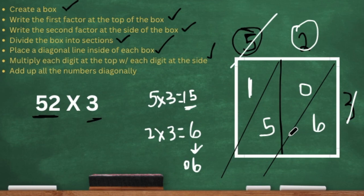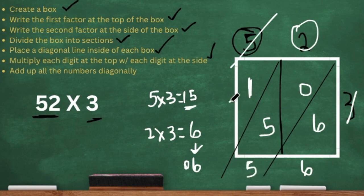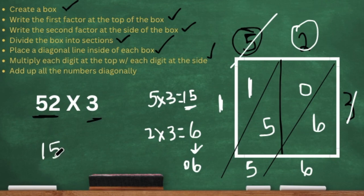So now we are going to add our numbers diagonally. We have three sections going diagonally. Six is the only number there, so six plus nothing is six. The zero plus the five is five. And the one plus nothing is one. So our final digits are one, five, six. Our final answer is 156.